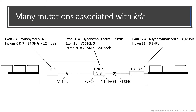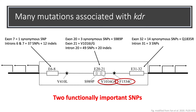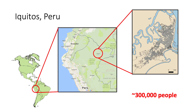We know that many mutations exist within the voltage-gated sodium channel gene. However, there are two SNPs that are known to be functionally important in Central and South America. I work with collaborators in Iquitos, Peru, who have been collecting and storing mosquitoes since the year 2000. I genotyped some of these mosquitoes to observe the evolutionary dynamics of KDR.